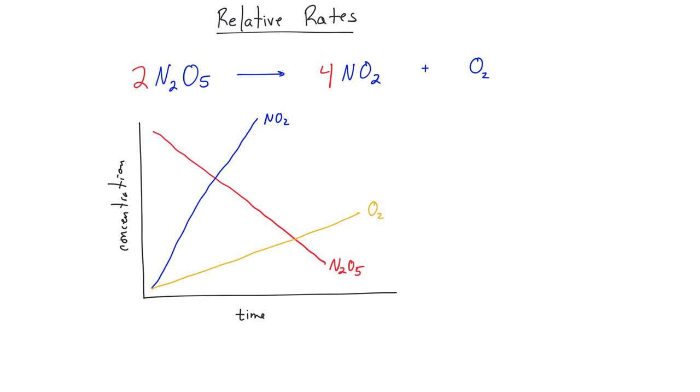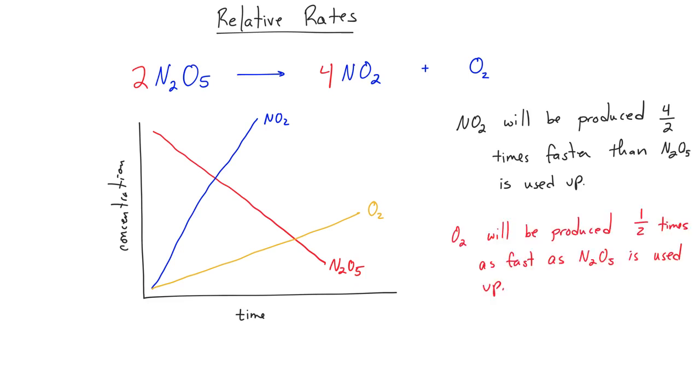To write this down in words, we can say that NO2 will be produced four halves, or two times faster, than N2O5 is used up. Also, O2 will be produced one half times as fast as N2O5 is being used up.